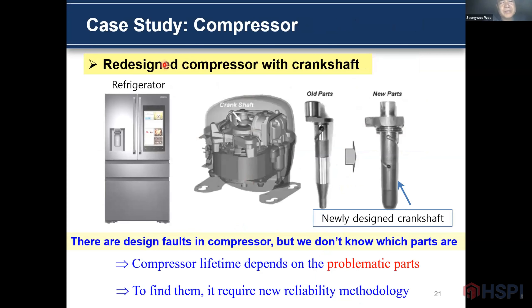I will give you one of the case studies in my parametric ALT. This is a redesigned compressor with a crankshaft, used in a refrigerator. There are a lot of design flaws in the compressor and we don't know which factors are critical. Compressor life targets depend on the problematic part. To find the ill-suited design, it requires a newly developed methodology.